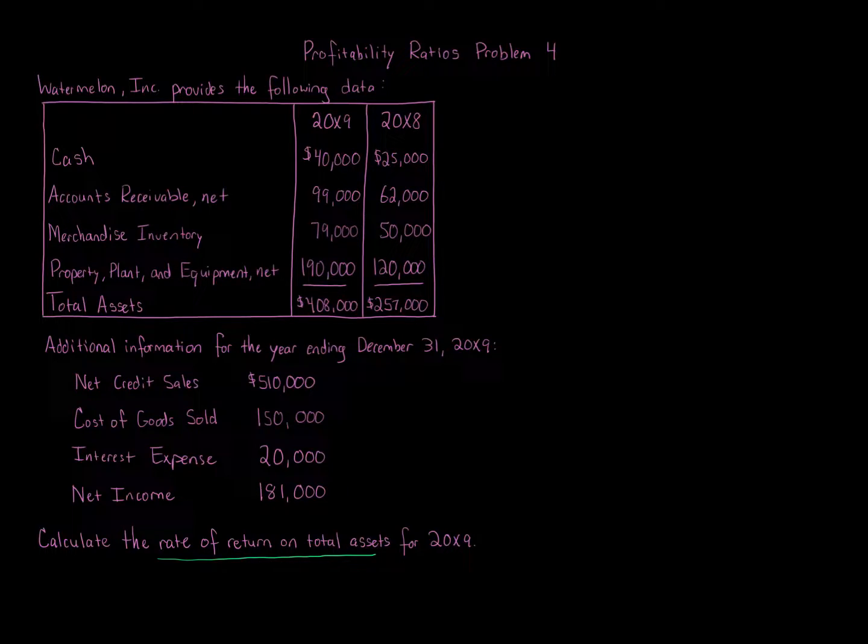Now this one specifically, rate of return on total assets or return on total assets, similar thing. The calculation, we're going to take the income plus interest expense. So the income plus interest expense, so specifically net income. So the net income plus interest expense, that's going to be the numerator, over the average total assets.